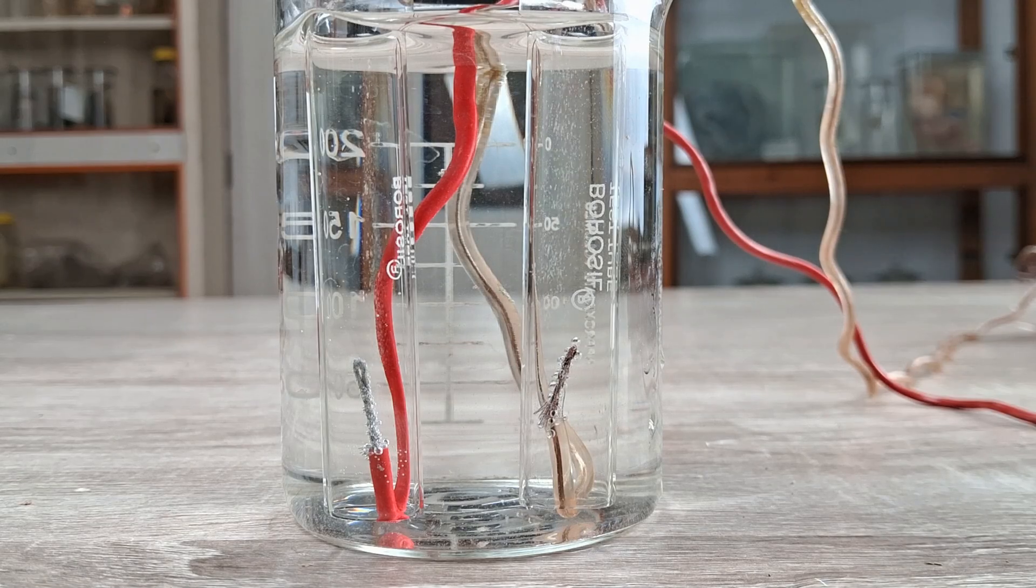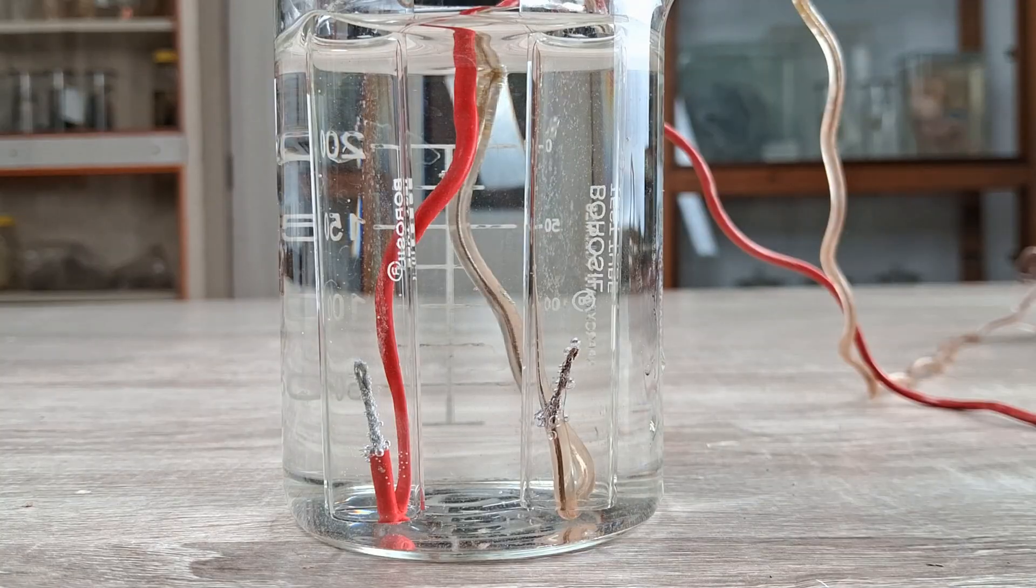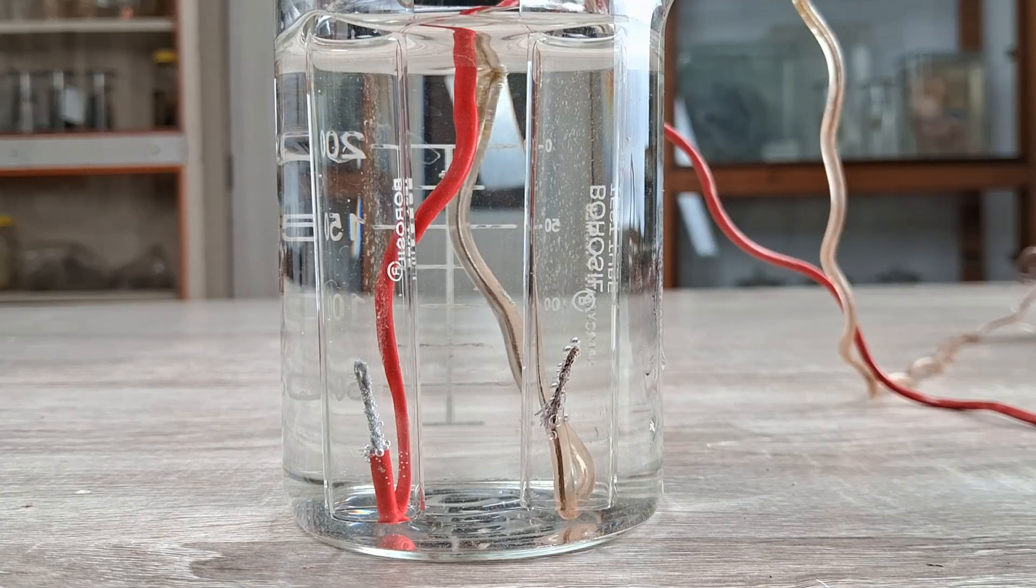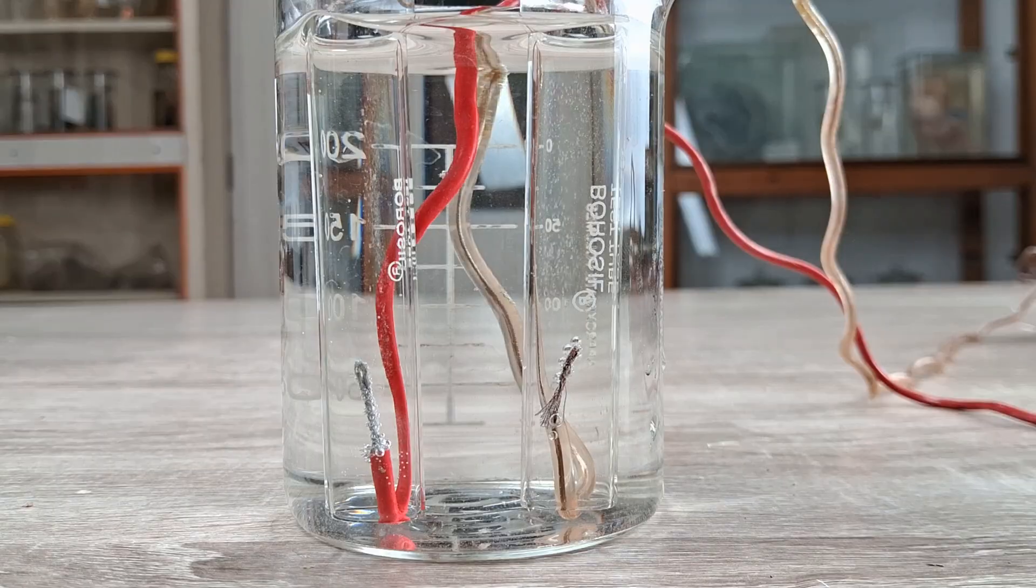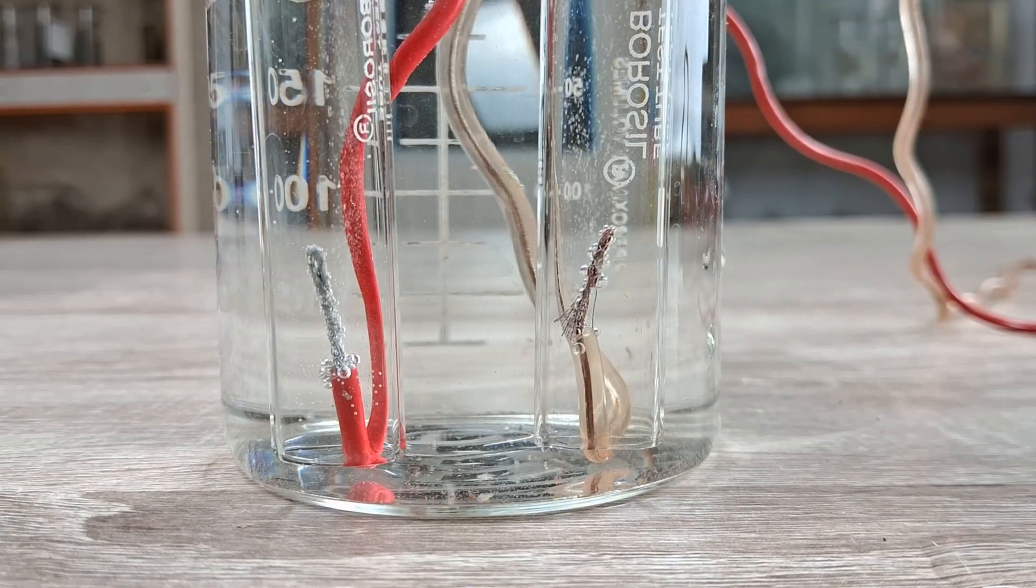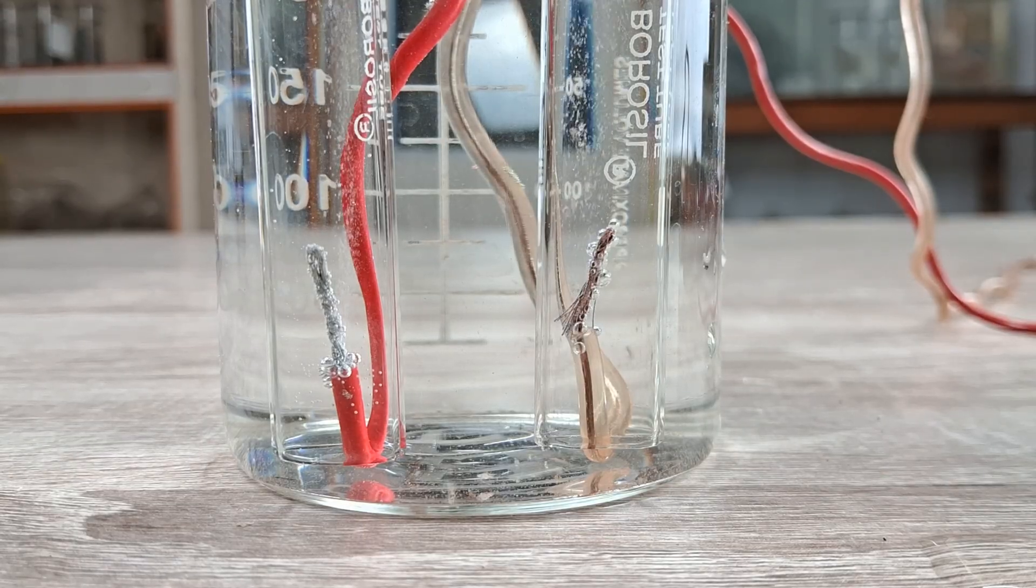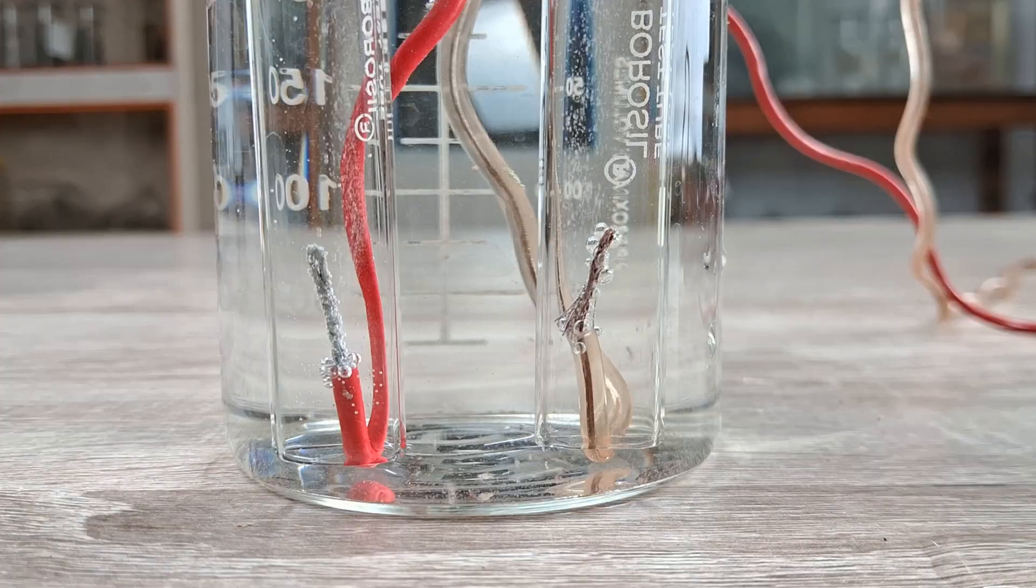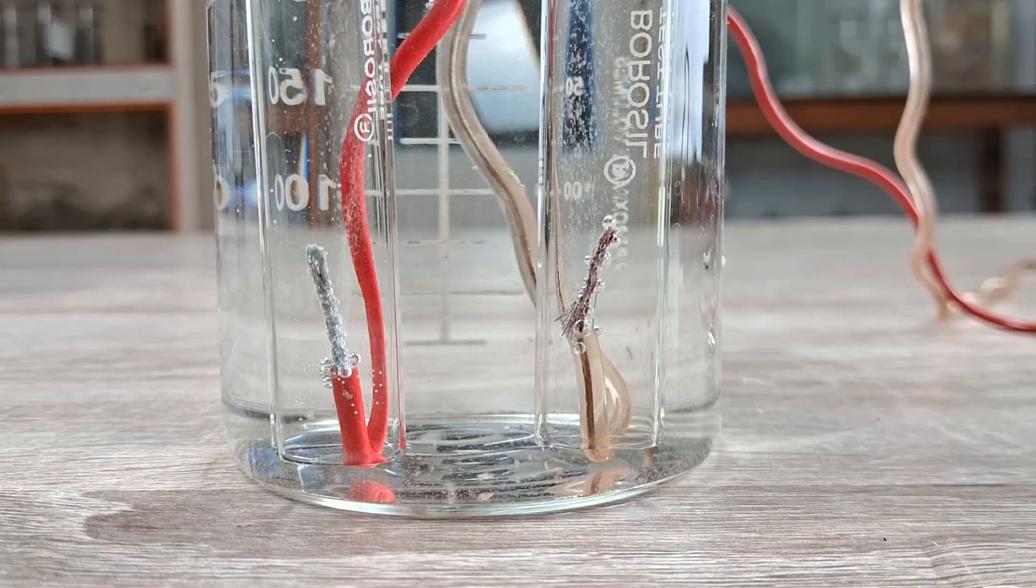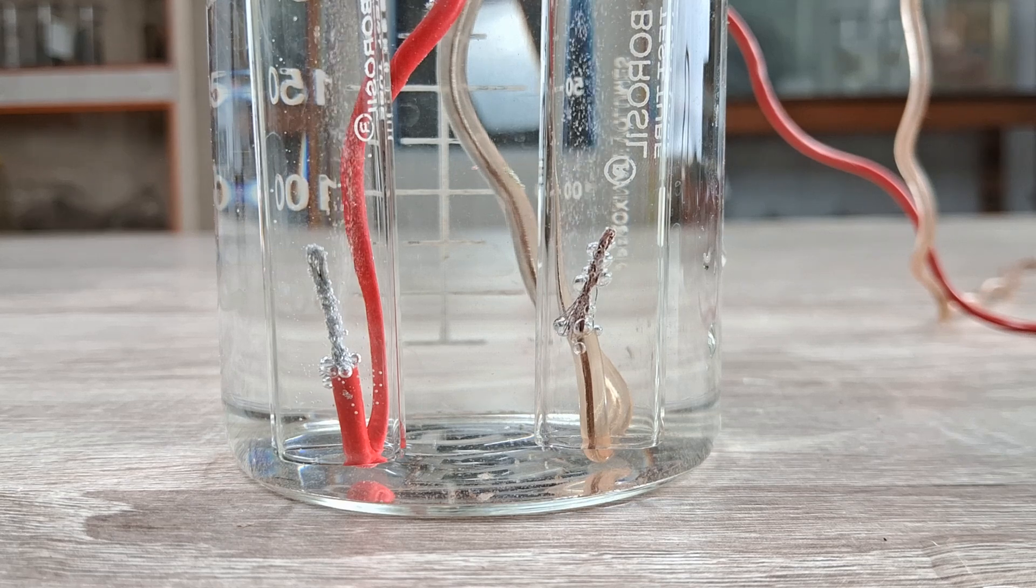When the electrolysis setup is connected to the power supply, you can almost immediately notice tiny gas bubbles originating from the exposed ends of the wires. On closer inspection, you will notice that the gas bubbles form more vigorously and at a faster rate at the wire connected to the negative terminal or cathode of the battery, compared to the wire connected to the positive terminal or anode.